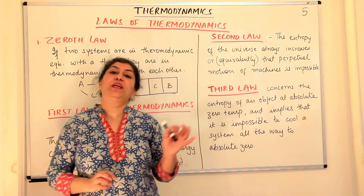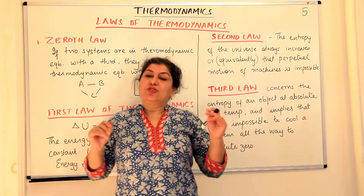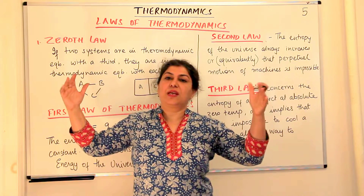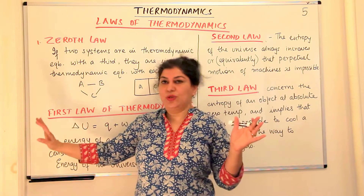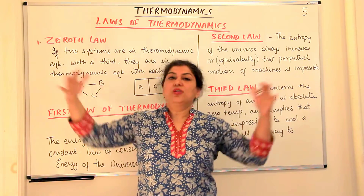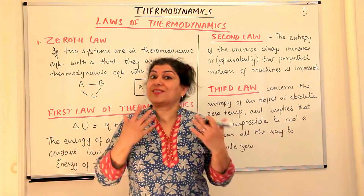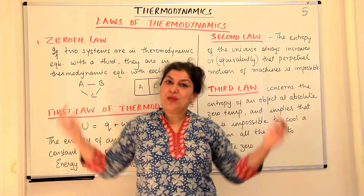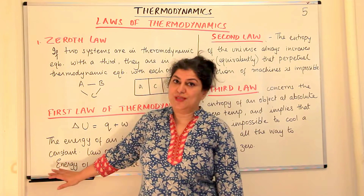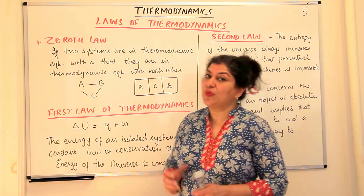If you take the universe to be an isolated system — we know there is nothing beyond the universe — then if you imagine the entire universe as your system of observation, it is an isolated system. And if the universe is an isolated system, then whatever energy changes are taking place in the universe, they are constant. So we say the energy of the universe itself is constant, and therefore this is also known as the law of conservation of energy.